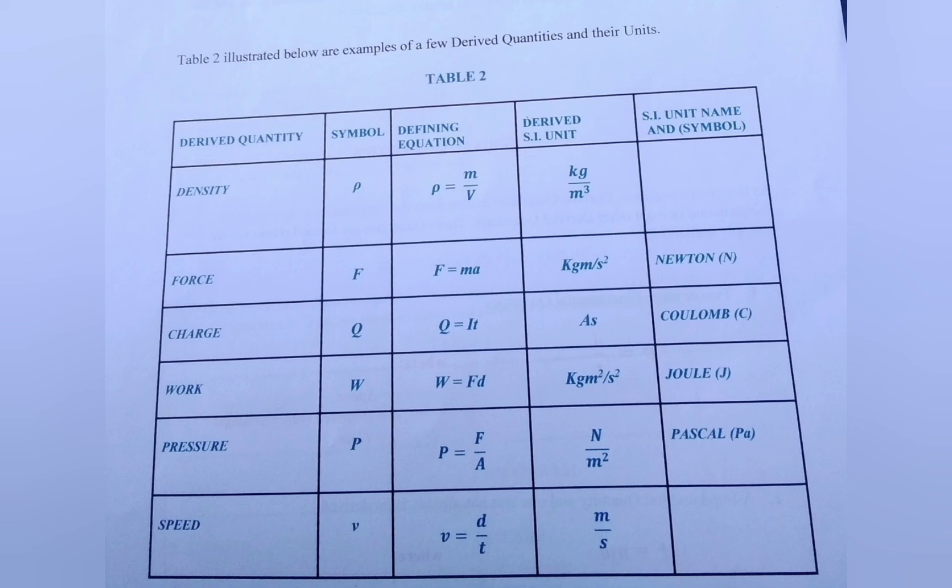The last but certainly not the least column is the SI unit name and symbol. Now this is the name that you will give to the unit of the quantity whenever you are performing equations. But one should make note of the fact that some derived quantities have no SI unit name. And as a result of this when representing their units we use their derived SI units. Density and speed are two such examples.